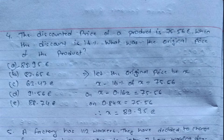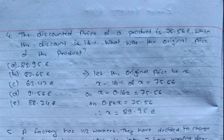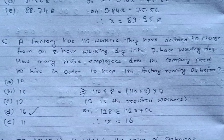Question four: the discounted price of a product is 75.56 euro when the discount is 16%. What was the original price? We assume the original price to be x. So x minus 16% of x equals 75.56, because 75.56 euro is the discounted price. This gives x minus 0.16x equals 75.56, so 0.84x equals 75.56, therefore x equals 89.95 euro. The correct answer is option A.